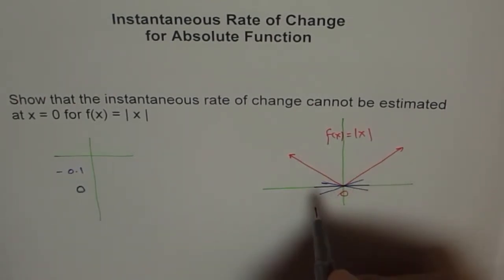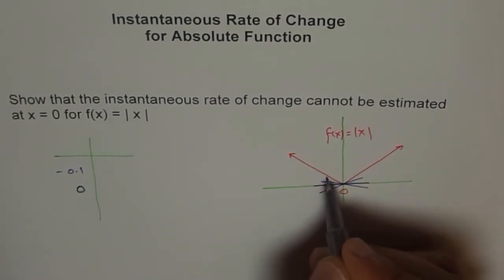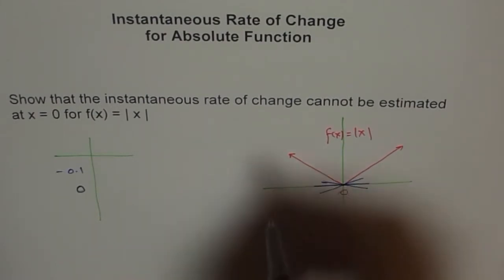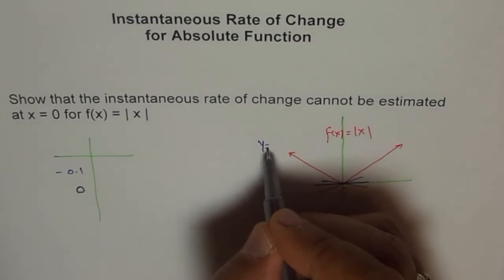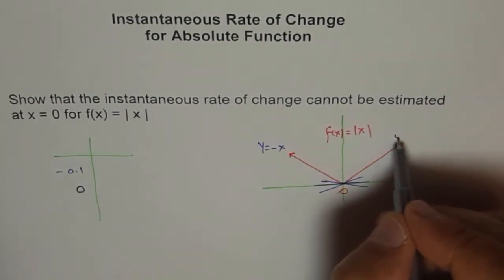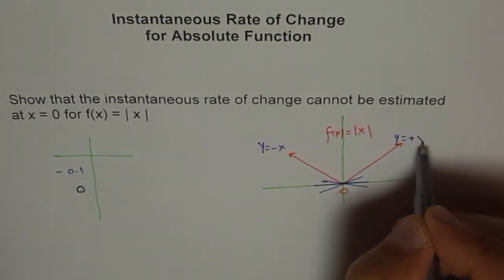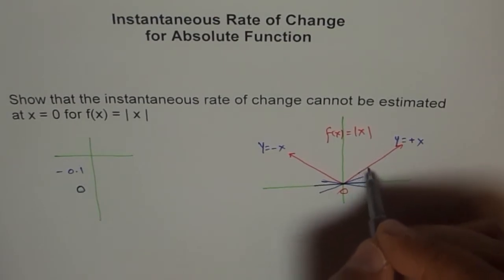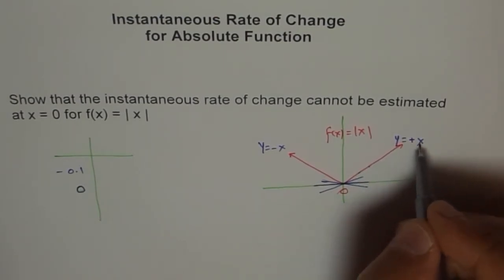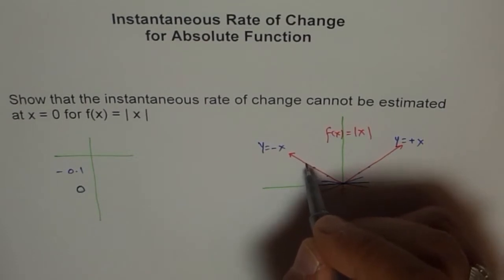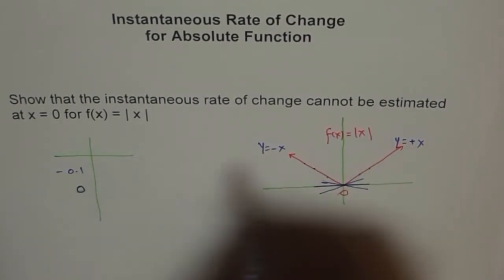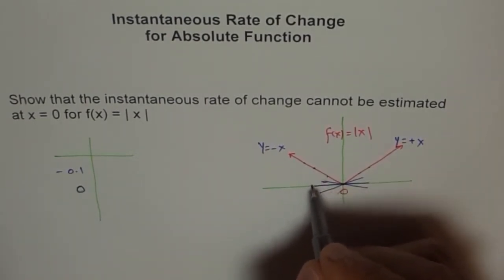So, we consider points very close to 0. Let's say we go from here and try to find a point at, let us say, 0.1. Minus 0.1, let's say. So, if I take a point from 0 to 0.1, then the slope between 0.1 minus will be on this side of the curve. Will lie on this line. And so, the slope will be, this is kind of y equals to minus x and this line is kind of y equals to plus x.